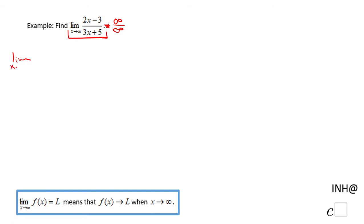Limit as x approaches infinity of (2x - 3)/(3x + 5). The way we do it is by factoring out an x from the numerator. In this case: x(2 - 3/x).